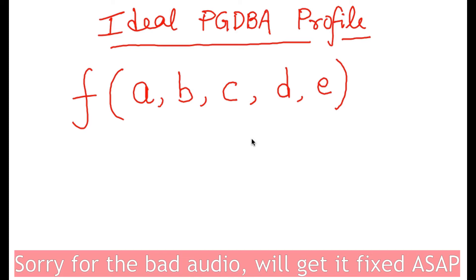Who is the ideal PGDBA candidate who has the highest chance of securing a seat at the prestigious PGDBA program? The answer to this question lies in a multivariate function of five variables: f(a, b, c, d, e).